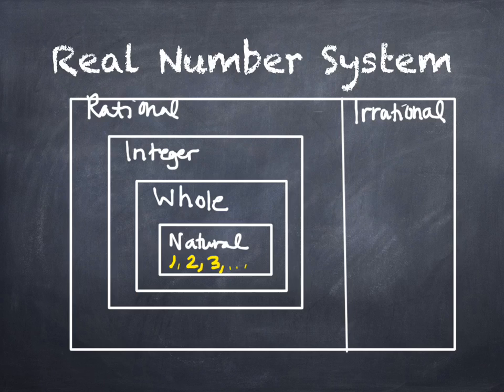Somewhere in kindergarten, somebody does this to a kid — they say 'I had three cookies and I ate all three cookies. How many cookies do I have left?' And you need the number zero. It wasn't one of the numbers we taught children to count with. That addition of zero creates a new category: the whole numbers. So whole numbers include zero and all the counting numbers — 0, 1, 2, 3, 4, and up.